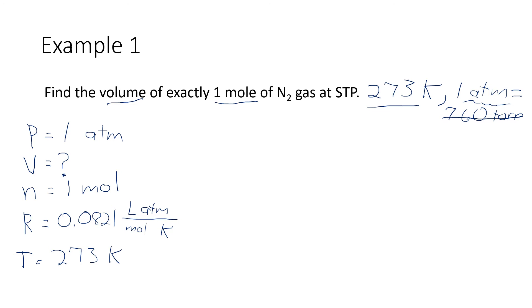So our ideal gas law says PV equals NRT. And the thing that we're trying to find is volume. Well, right now volume is multiplied by P. So to get volume by itself, I need to divide by P. And of course, if I do it to the left-hand side, I also have to do that to the right-hand side. So I now have an equation that says volume is equal to NRT over P.